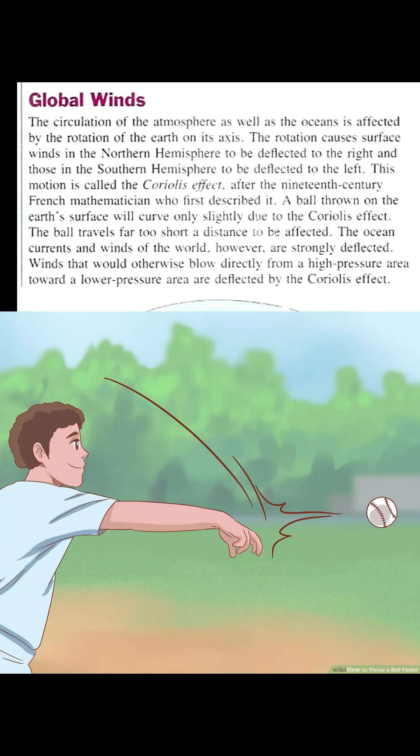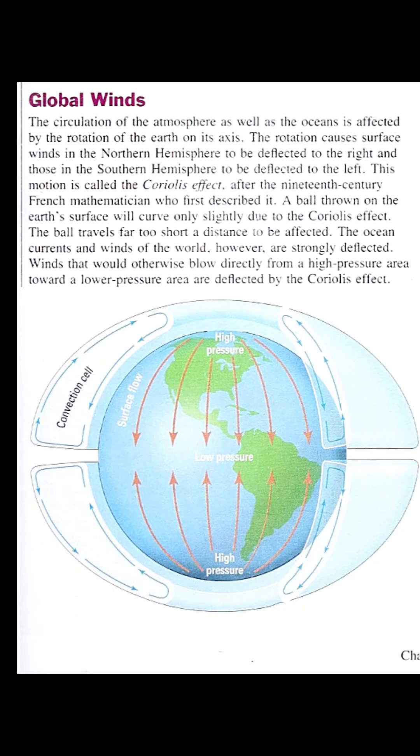A ball thrown on the earth's surface will curve only slightly due to the Coriolis effect — the ball travels too short a distance to be affected. The ocean currents and winds of the world, however, are strongly deflected.